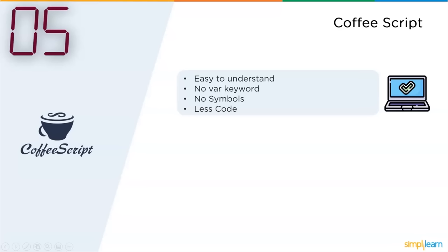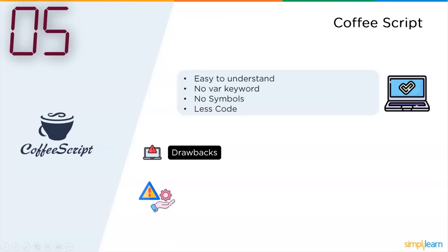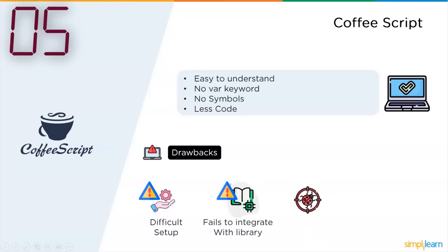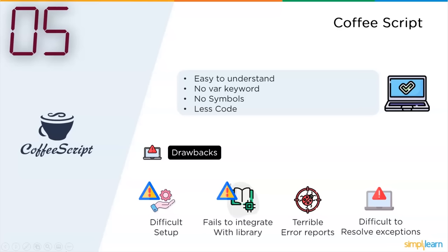Those were the major advantages of CoffeeScript. The drawbacks that made it obsolete: it was really difficult to set up the environment, it failed to integrate with high-end libraries, it had terrible error reports, and it was difficult to resolve exceptions. These were the first five obsolete and dying programming languages of the list.